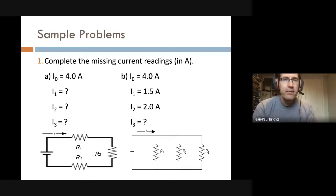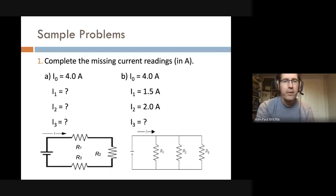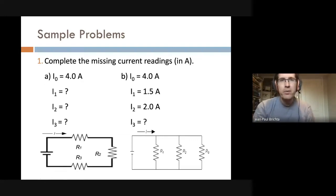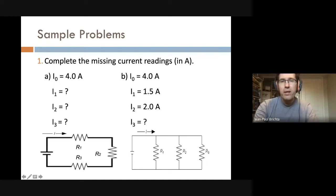Let's apply Kirchhoff's laws to a couple of situations. First, identify whether the circuit is series or parallel. In the first example, there is only one path for the current — it comes out of the battery, through resistor 1, through resistor 2, through resistor 3. The current is measured as four amps right after the battery, so the current through all three resistors is also four amps. That was pretty easy.